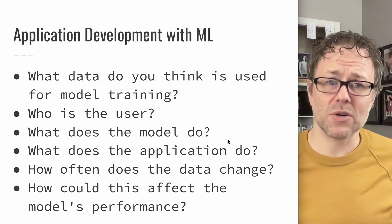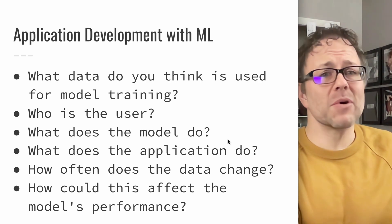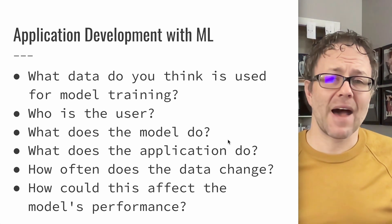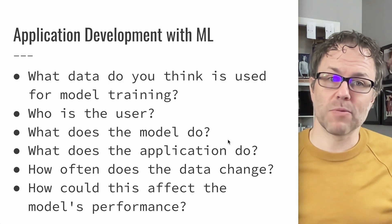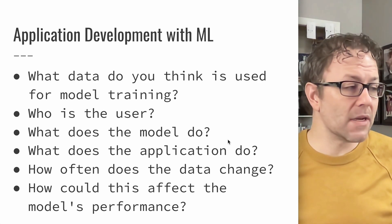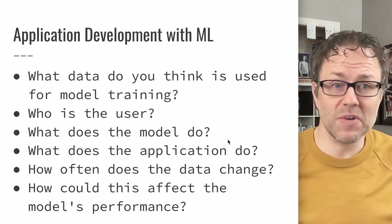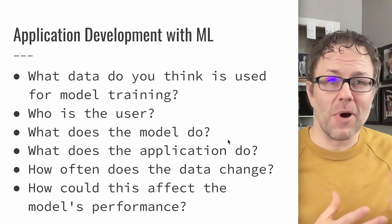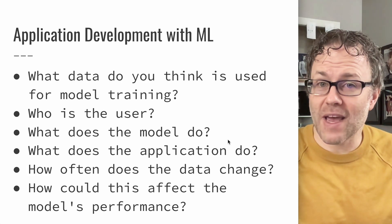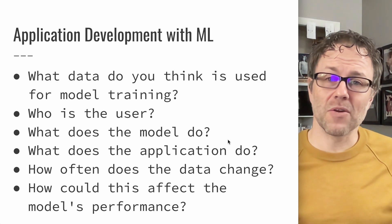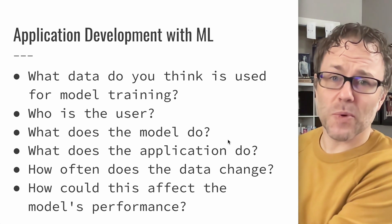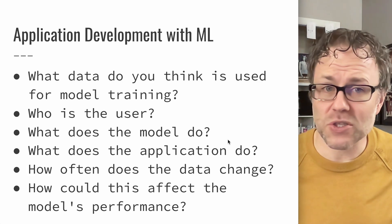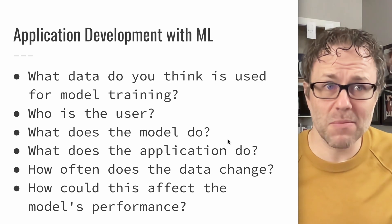What does your application do and what's its purpose? The thing you're building is not the model — the model is just part of it. How often does the data change and how could this affect the model's performance? For example, if you're building something to forecast inventory needs for a retailer, your model takes data and makes a forecast, but the application has to handle providing the right inputs. Something like shopping is very seasonal, so you may have to retrain frequently on different segments of data.